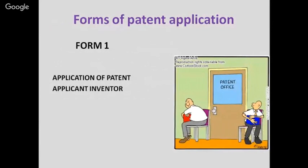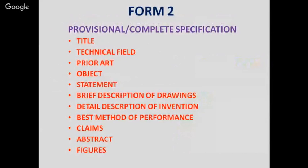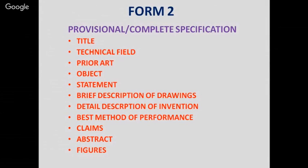Certain forms are required for filing the patent. Form 1 is the application for patent and applicant/inventor details — these forms can be downloaded from ipindia.nic.in. Form 2 contains the complete specification or complete description regarding novelty and regarding the product or process. Various sections to be completed include: title, technical field, prior art — the existing technology in the particular area — and the object or main purpose of the invention addressing specific societal needs.